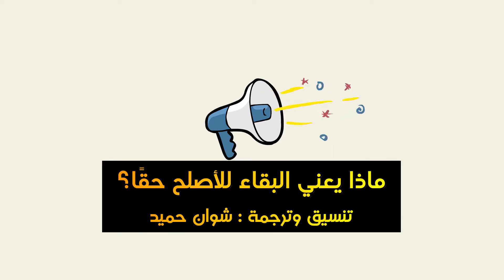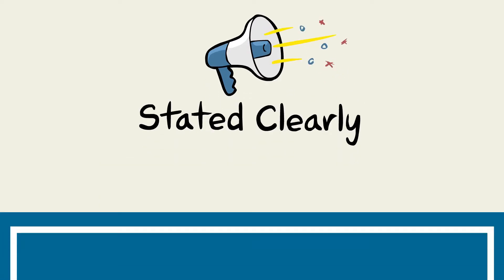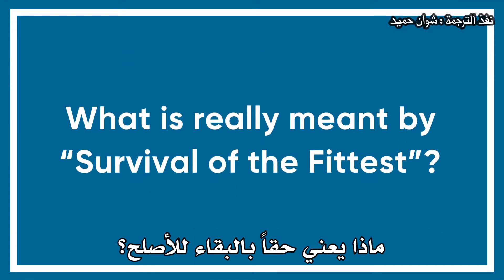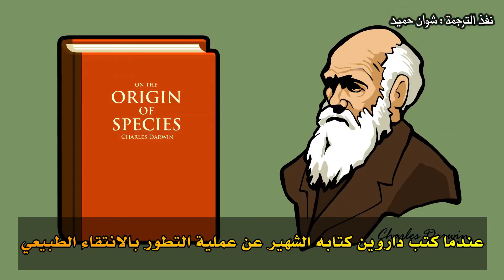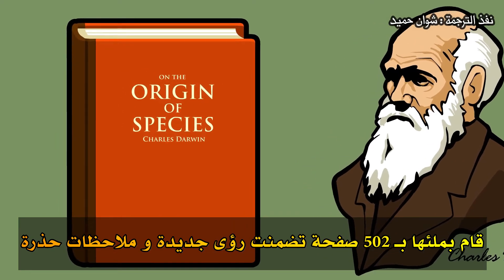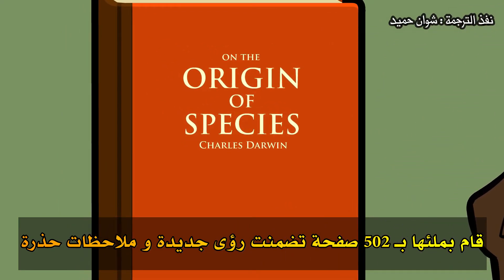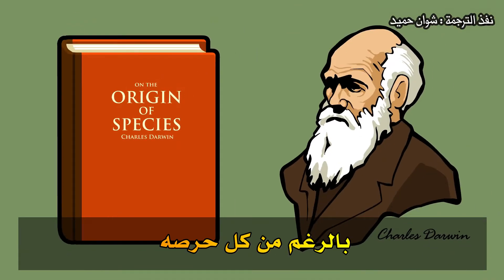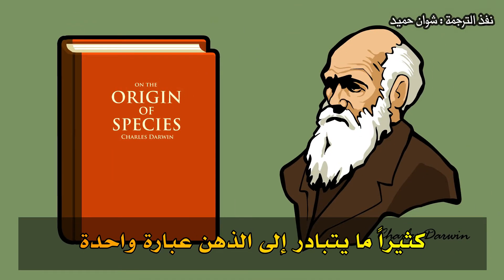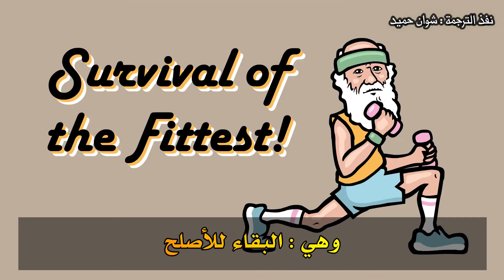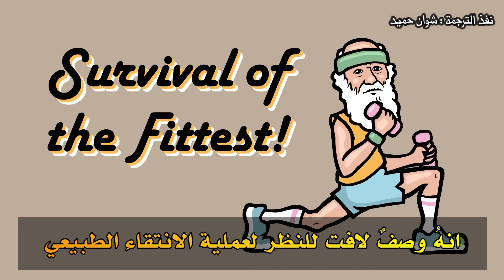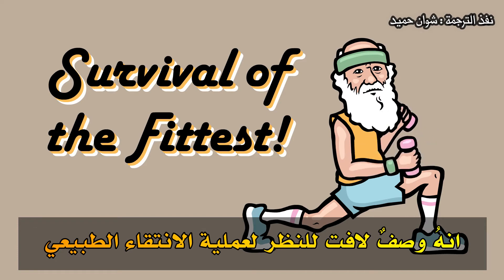Stated Clearly presents: What is really meant by survival of the fittest? When Darwin wrote his famous book about the process of evolution by natural selection, he filled 502 pages with new insight and careful observations. In spite of all his care, when people think of natural selection, a single phrase often comes to mind: survival of the fittest. It's a catchy bumper sticker description of the process of natural selection.